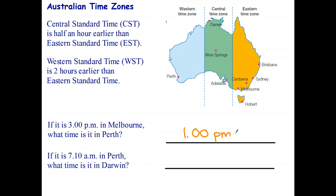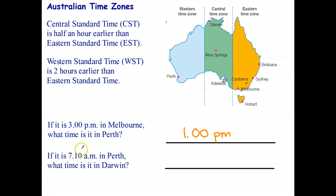Okay and working the other way — if it's 7:10 a.m. in Perth, what time is it in Darwin? Well, that's a two-hour difference from Perth to Eastern, and a half-hour difference for Central, so that's one and a half hours. It's going to be earlier in Perth and later in Darwin, so we add one and a half hours: 7:10 a.m. → 8:10 a.m. → 8:40 a.m.